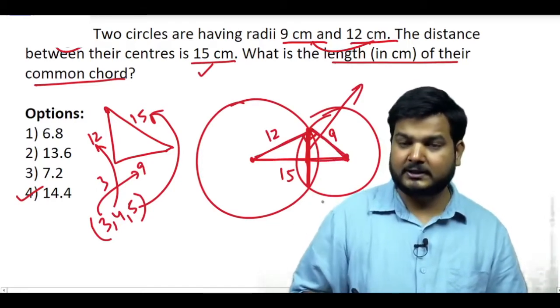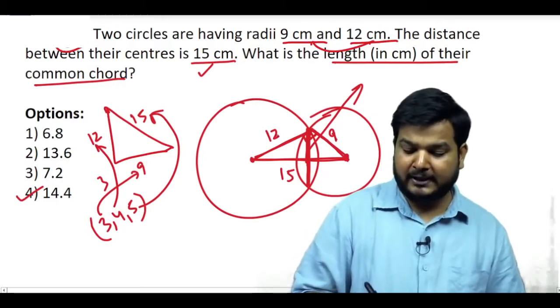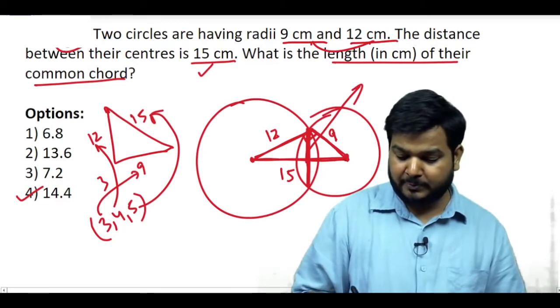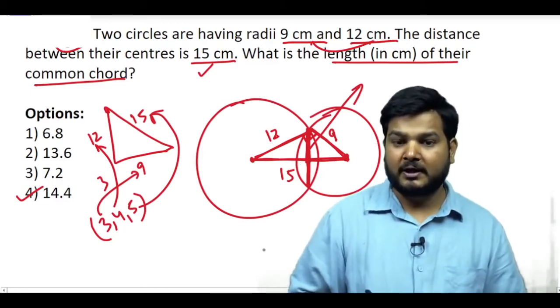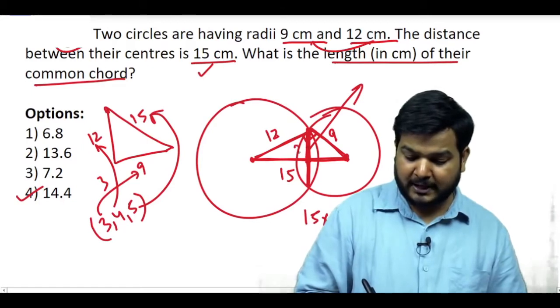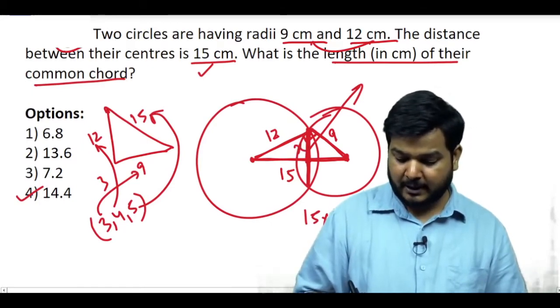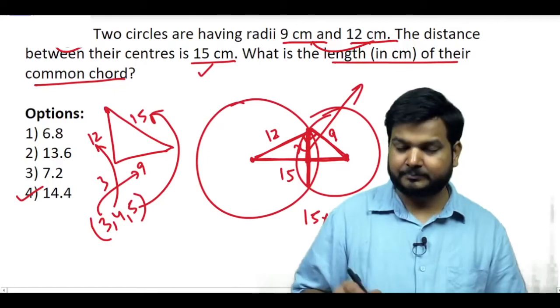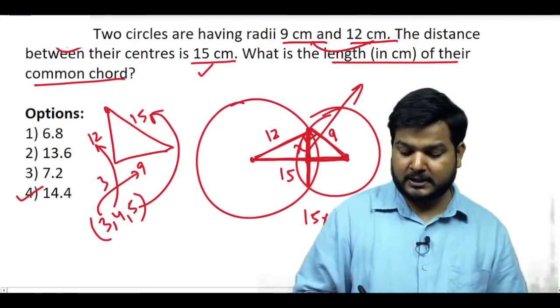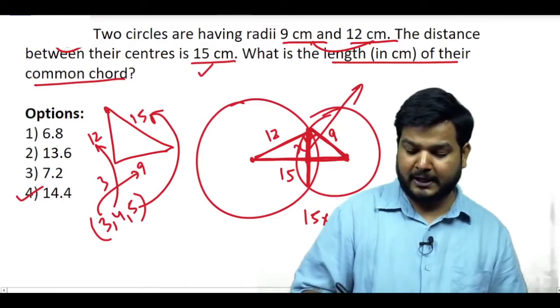Ab yeh duri kaise aayegi? Duri dekhna yeh jo triangles ka area aap do tarike se leke dekhna. Half into 9 into 12 aur saath mein ek tarika aur bhi hai half into 15 into this altitude. Toh ultimately 15 into yeh wala altitude, agar maine isko thodi der ke liye x bol diya toh 15 times x aapka 9 into 12 ke barabar hai. Half half toh cancel ho jayenge yahan per. Yeh 15 aur iska altitude liya and here it was 9 and 12, the perpendicular sides were multiplied.